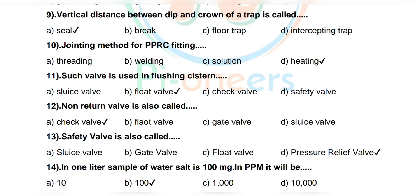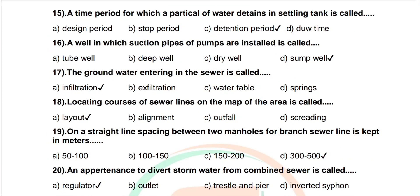Question 14: In a one-liter sample of water, salt is 100 mg — in ppm it will be — options: 10, 100, 1000. Correct answer: 100. Question 15: Time period for which a particle of water is detained in a settling tank is called — options: design period, stop period, detention period, due time. Correct answer: detention period.